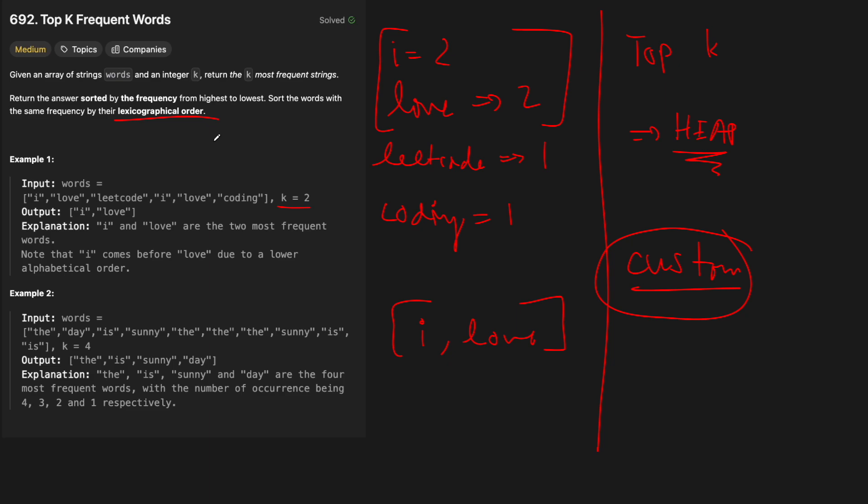This is where the solution gets very cool. We need to build a map of counts for each word, and then build a heap that tells us the top elements. Because it has to be a custom heap, when we compare two words in the heap operation, it needs to take into account not just the count but also the lexicographical order. Let's go to the code editor — this is probably one of the first times you'll have seen this in a LeetCode problem.